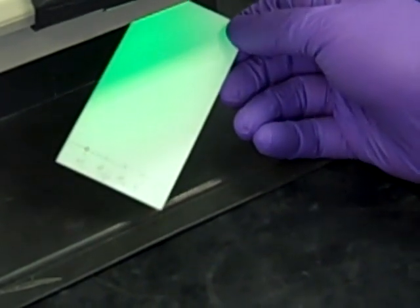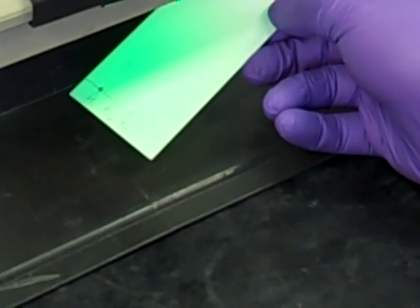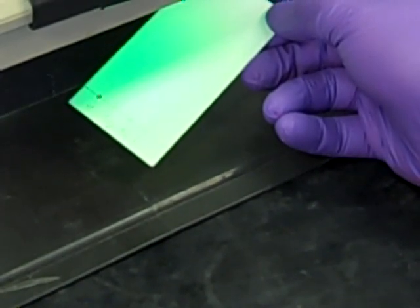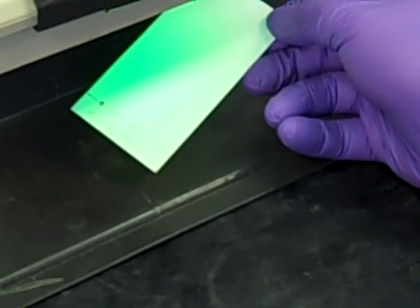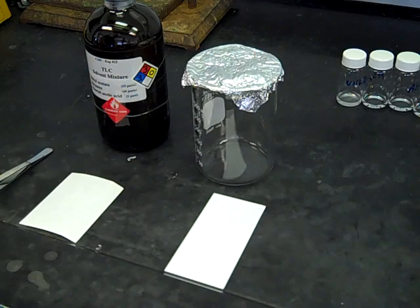It's kind of difficult to see from that distance, but you can actually see a dark spot right there on that first lane. That means I've spotted enough to get a visualization once I'm done with the TLC run. You can do that with each of your spots to make sure you've spotted correctly.